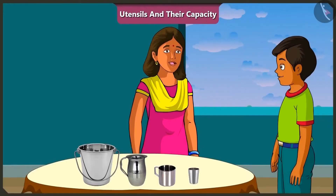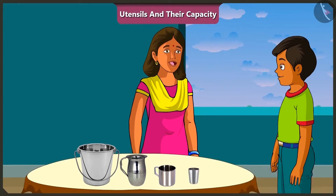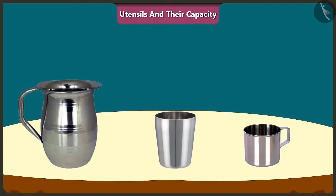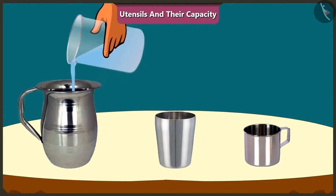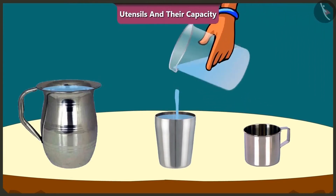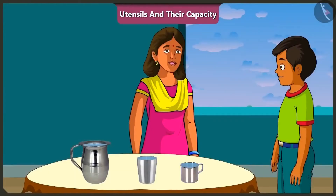Mishtu dear, but in that case you will need a vessel which has more capacity than this glass. Mommy, please explain what is this capacity. See Mishtu, the capacity of any vessel is exactly how much of anything we can fill it with. Let me explain it to you. I will pour water in this jug, in this glass and in this mug. The amount of water that can fill each of these vessels respectively is called its capacity.